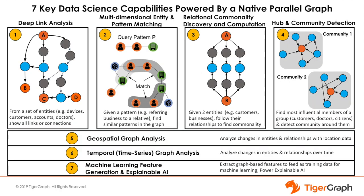This chart presents a logical organization for the seven key data science capabilities powered by native parallel graph. We start on the upper left side with a basic capability, deep link analysis — the ability to efficiently and programmatically traverse a graph for three or more hops and then analyze the data encountered in that traversal. TigerGraph easily traverses 10 or more hops. The more hops you traverse, the more insight you enable, but it is also harder because the number of connections can grow exponentially. Deep link analysis powers next-generation fraud detection, anti-money laundering, as well as recommendation engine solutions.